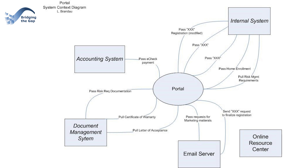You could also represent pass and pull using arrows on the lines just to show direction instead of words. It's not typical to have a system without a line flowing to or from it. In this case, we do have an example like that — the online resource center. That's because this was an existing version of what's called the portal that was going to be retired, so I wanted to explicitly show that there was no relationship between the portal and the resource center. It was a great way to really establish the scope of the project visually.